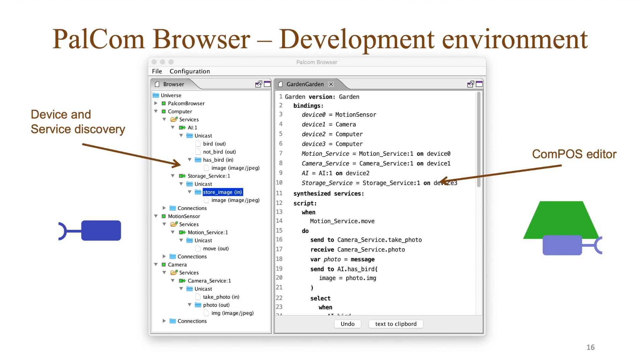To the right we see the COMPOS editor. To use a service in a script, the user can drag it from the discovery view on the left to the editor on the right. Thanks!